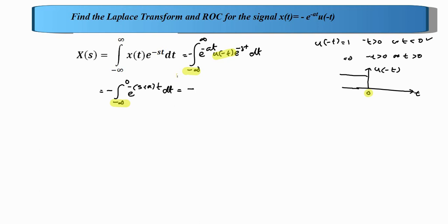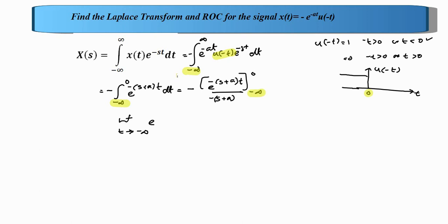Integrating gives minus 1 times e raised to minus s plus a into t, divided by minus s plus a, with the limit from minus infinity to 0. Now we consider the limit t tending to minus infinity — unlike the previous case which was positive infinity. We examine e raised to minus s plus a into t. Case 1: if the real part of s plus a is greater than 0, t is minus infinity, so we get e raised to positive infinity, which equals infinity — this diverges.